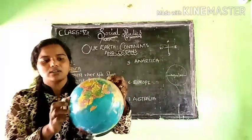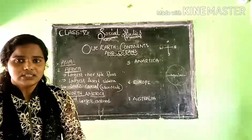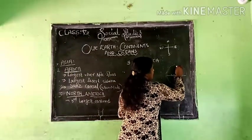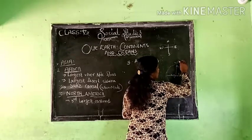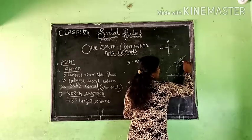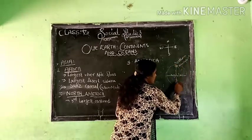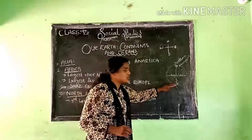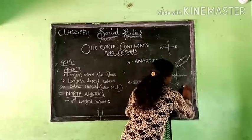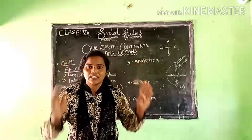The equator divides North and South. The part above the equator is known as the Northern Hemisphere. The part below the equator is known as the Southern Hemisphere.